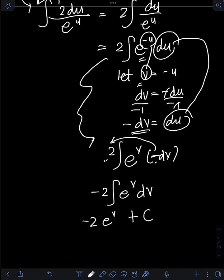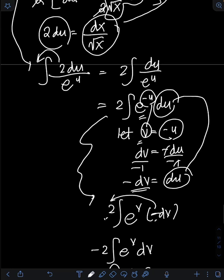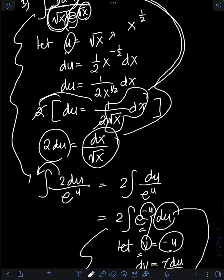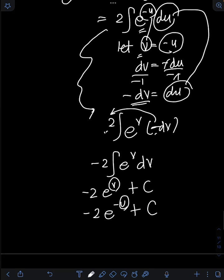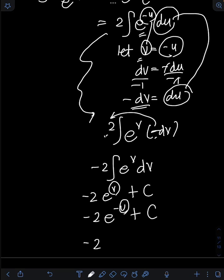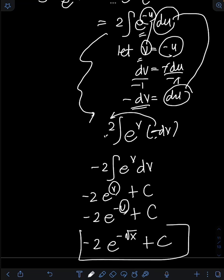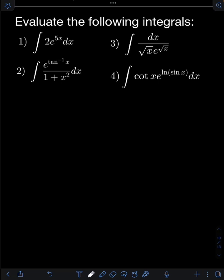Now we transform back: v equals negative u, so we have negative 2 e raised to negative u plus c. Then substituting back u equals square root of x, the final answer is negative 2 e raised to negative square root of x plus c.